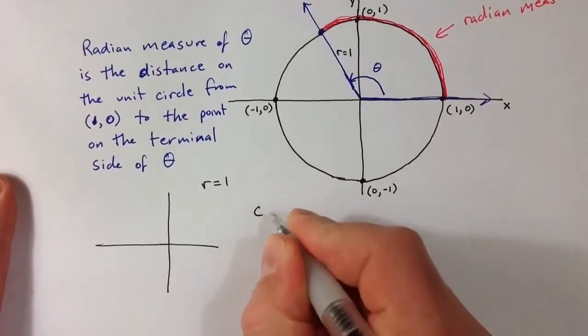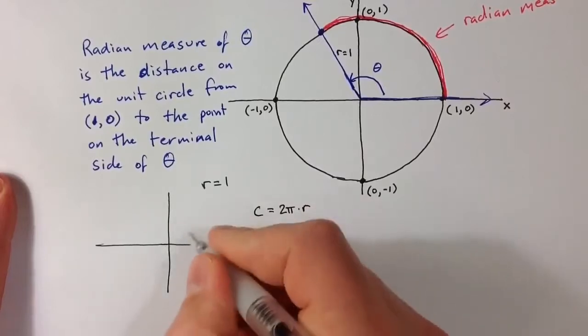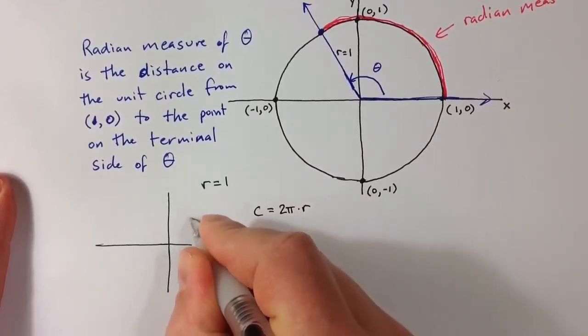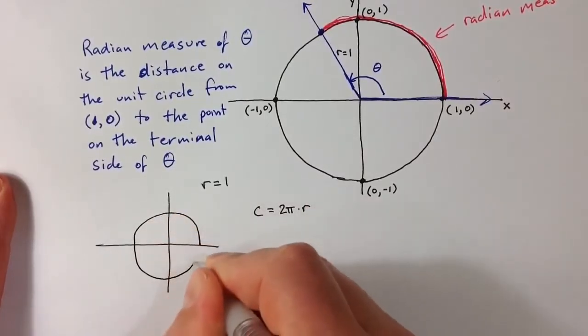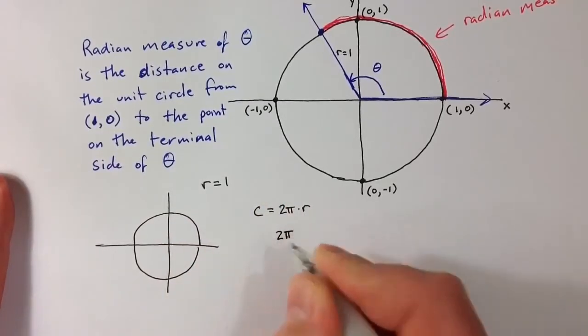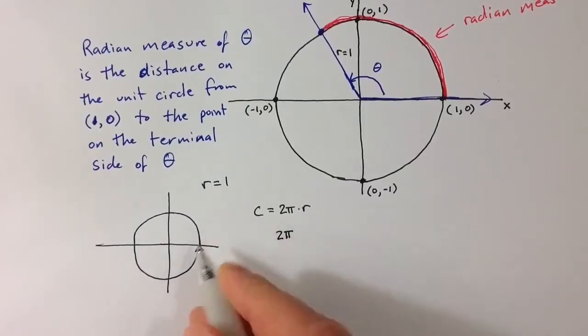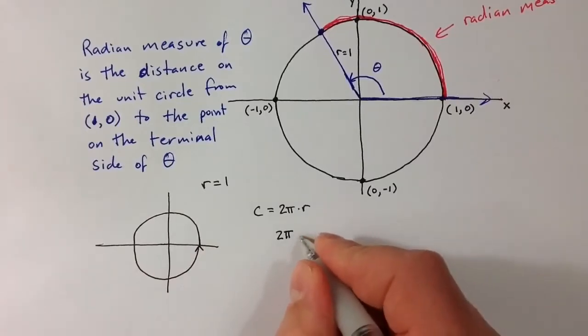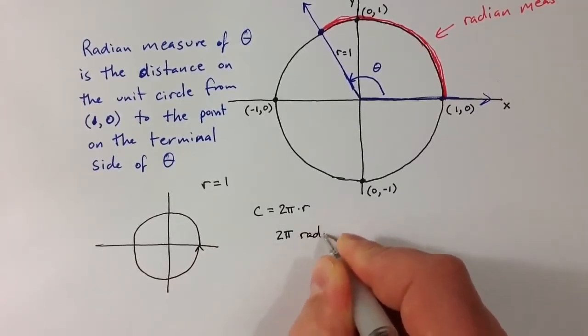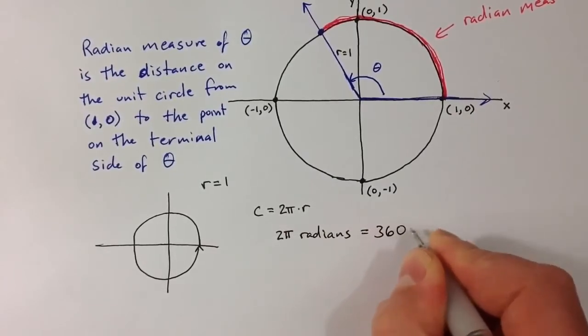We know that the circumference of any circle is 2π times r, and so the circumference of the unit circle, since r equals 1, is simply 2π. So 2π is one complete trip around the circle. It corresponds to one full rotation. So we say that 2π radians is equivalent to 360 degrees.